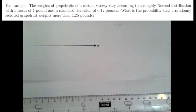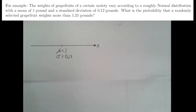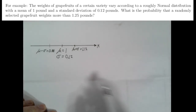Let X be the weight of an individual grapefruit. The average weight of grapefruit in that variety is one pound, and the distribution has a standard deviation of 0.12 pounds. This is a nearly normal distribution, so mu plus one standard deviation would be 1.12 pounds — that's one standard deviation above the mean. One standard deviation below the mean would be 0.88 pounds.